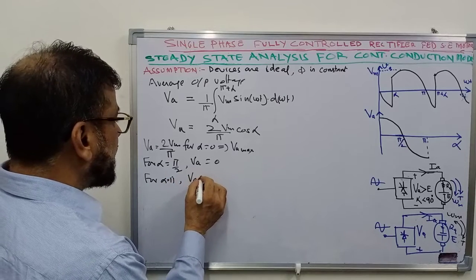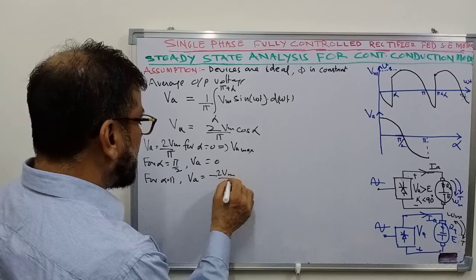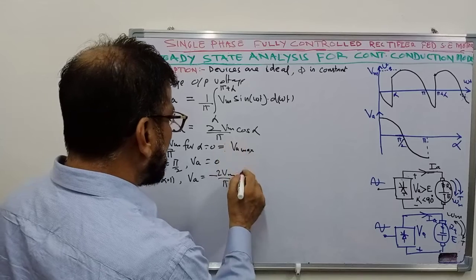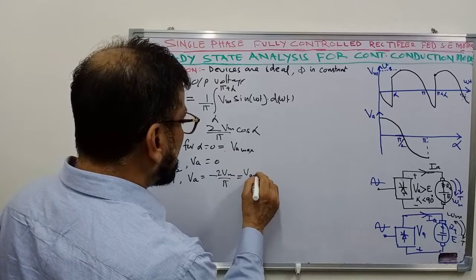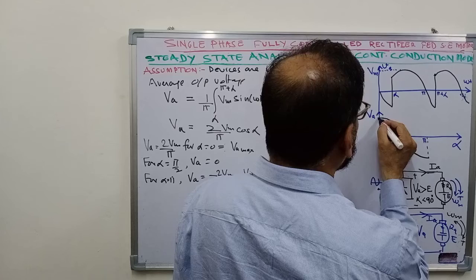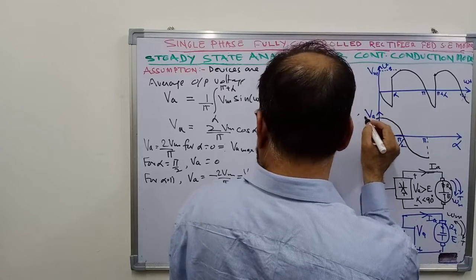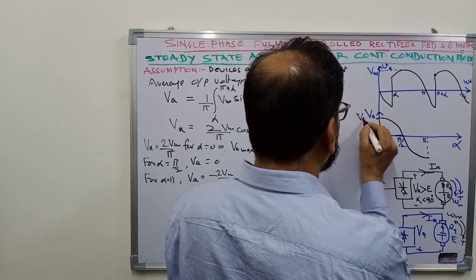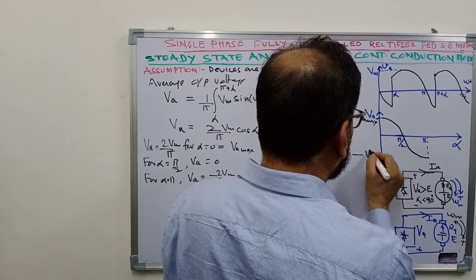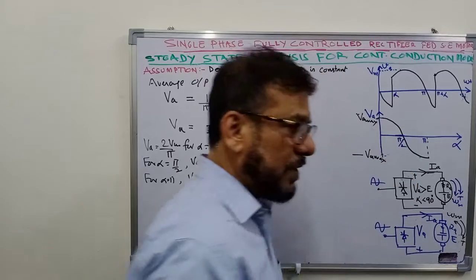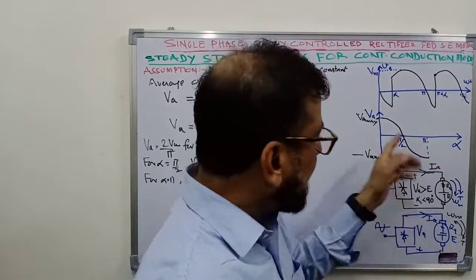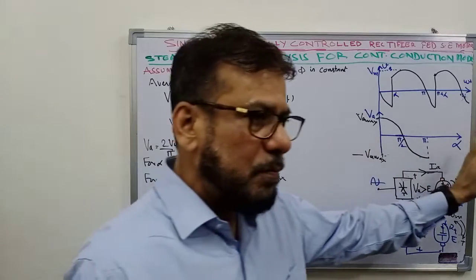For alpha equal to pi radians, Va equals minus 2Vm/π, which is Va_minimum. So output voltage varies from plus 2Vm/π (Va_max) to minus 2Vm/π (Va_min) as alpha is varied from 0 to pi radians.